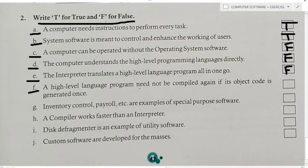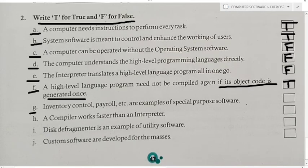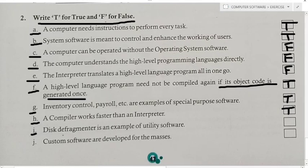Sixth True/False: A high level language program need not be compiled again if its object code is generated once — answer is True. If the machine code is generated once, there is no need to compile again. Seventh: Inventory control, payroll, etc. are examples of special purpose software — answer is True. Eighth: A compiler works faster than an interpreter — answer is True.